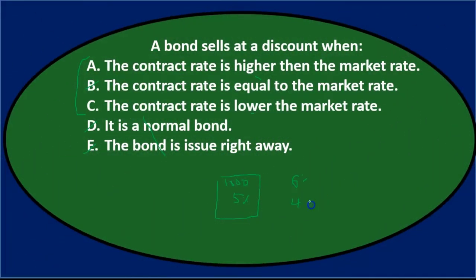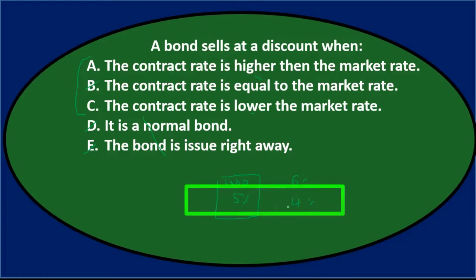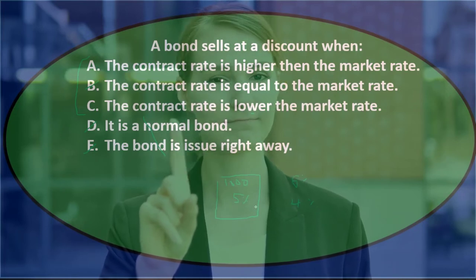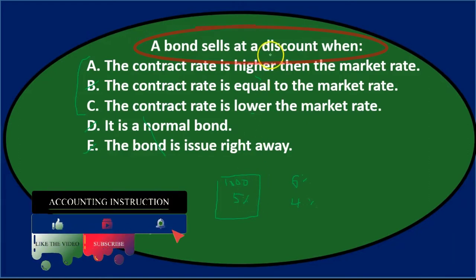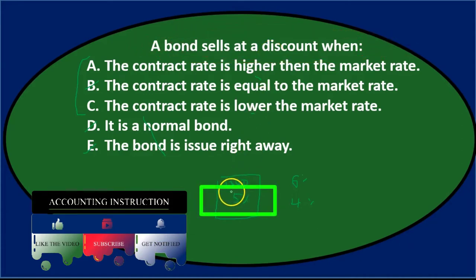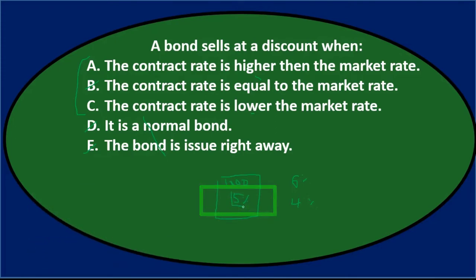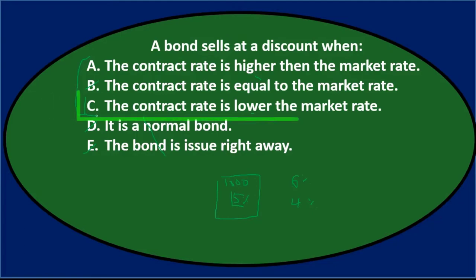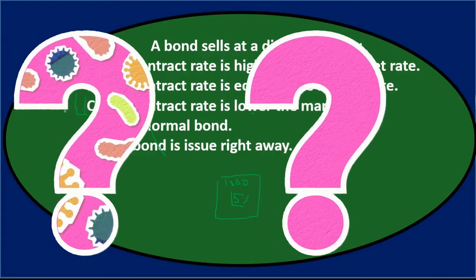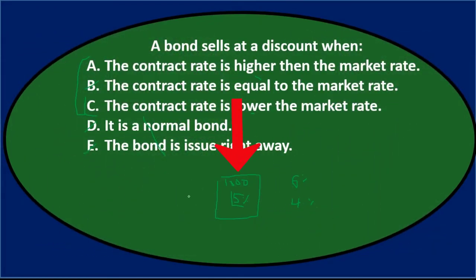Conversely, if the market rate is 4% and our bond pays 5%, investors would happily give us $1,000 since they can't do better elsewhere — but we'd issue it at a premium because we're paying more than the market rate. So a bond sells at a discount when our contract rate is lower than the market rate, because investors can go elsewhere for better interest. The answer is C. This relationship is almost guaranteed to appear on an exam.